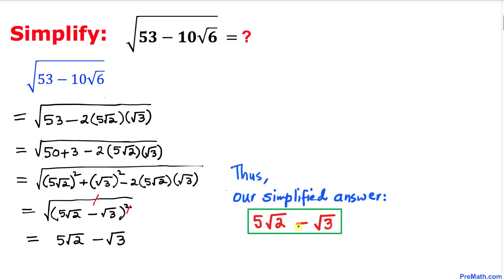So our simplified answer turns out to be 5 times square root of 2 minus square root of 3. Thanks for watching and please don't forget to subscribe to my channel for more exciting videos. Bye!